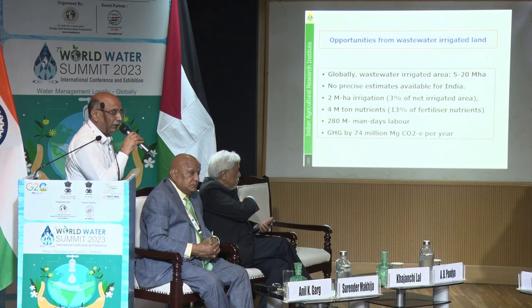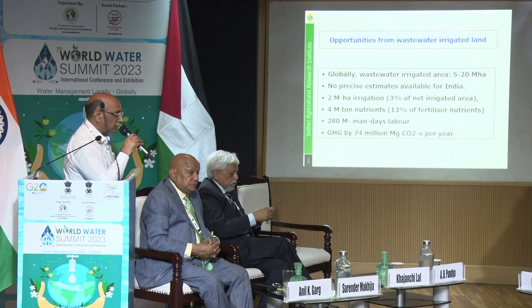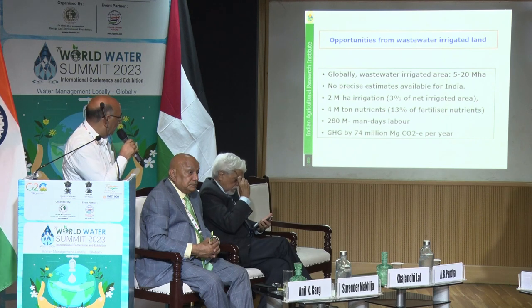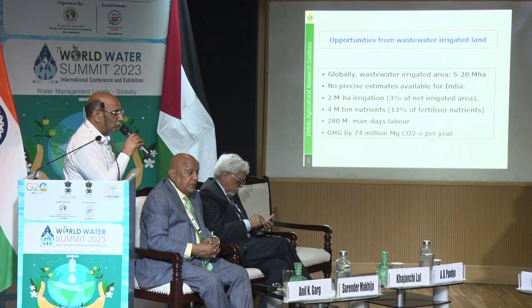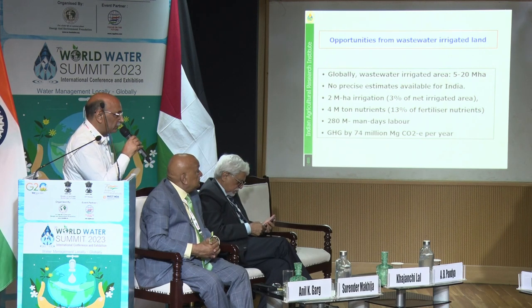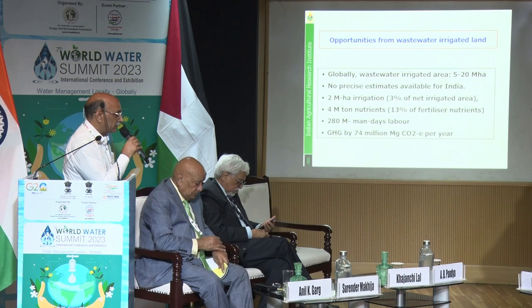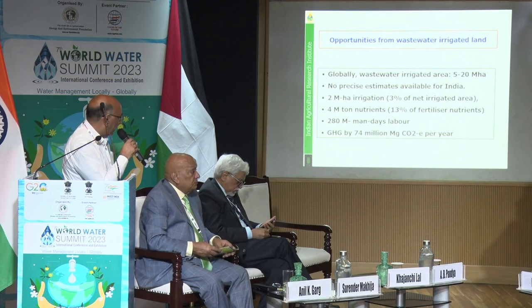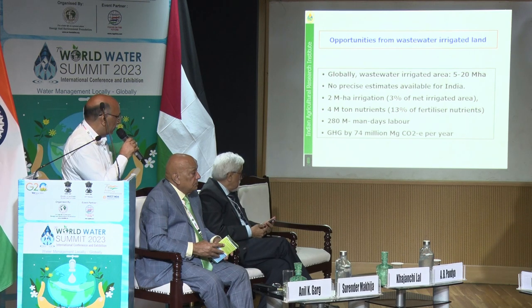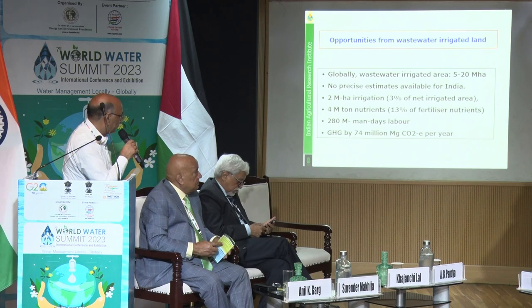We have been working on wastewater use for the last 20 years. We estimated that in India, about 2 million hectares of land can be irrigated using wastewater, 4 million tons of nutrients can be generated — that is 13% of the fertilizer nutrient being supplied. Additionally, we can provide 280 million days of labor and reduce greenhouse gas emissions by 74 million megagrams of CO₂ equivalent per year.